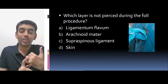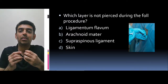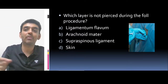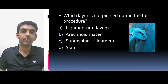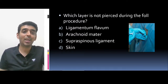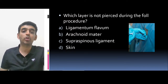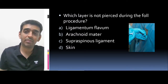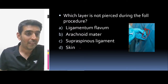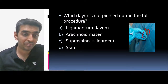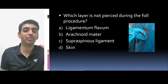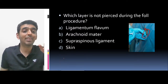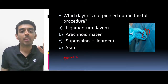Looking at the needle and procedure, this is an epidural procedure being performed — not a lumbar puncture. When we perform an epidural procedure, the layers pierced are: skin, subcutaneous tissue, supraspinous ligament, interspinous ligament, and ligamentum flavum. The needle then stops in the epidural space, which is above the dura mater.